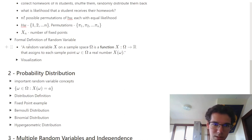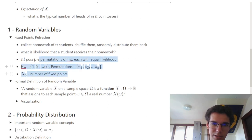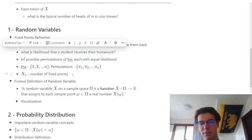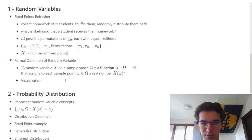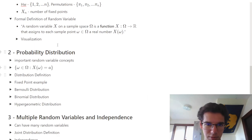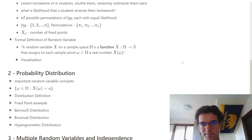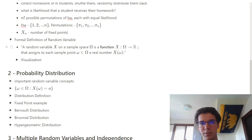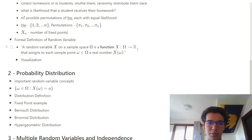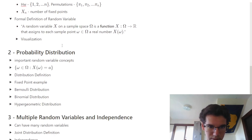Now with this example, we're going to look at random variables more closely. A random variable X on some sample space Omega is a function — it's really just a function that takes sample points from Omega and maps them out to numbers on the real number space.